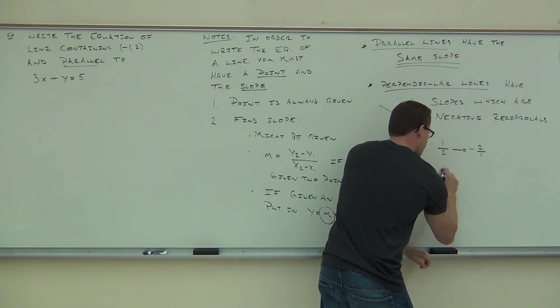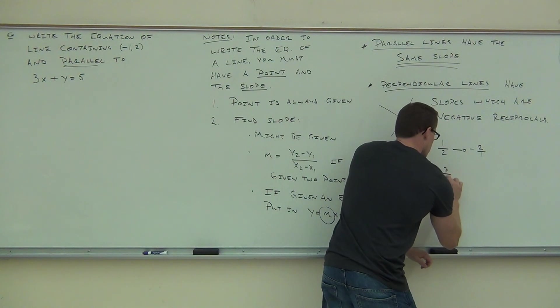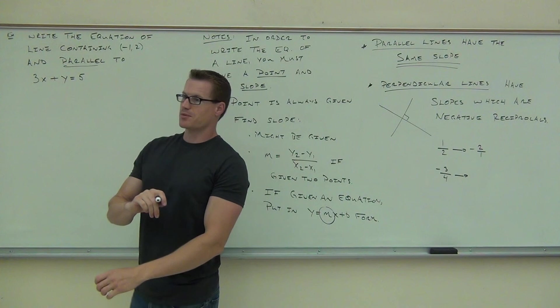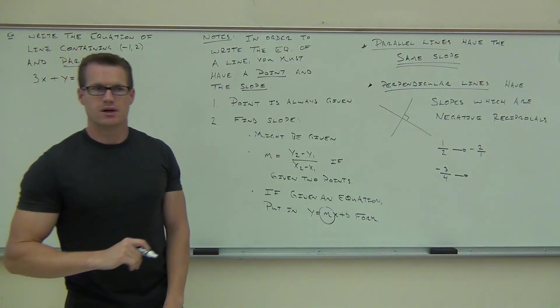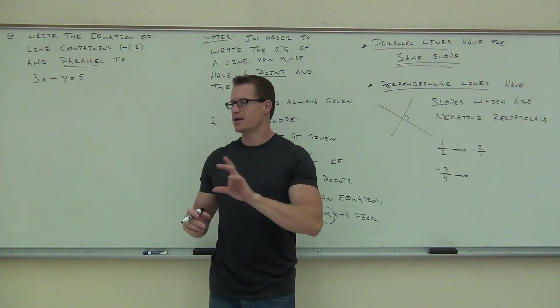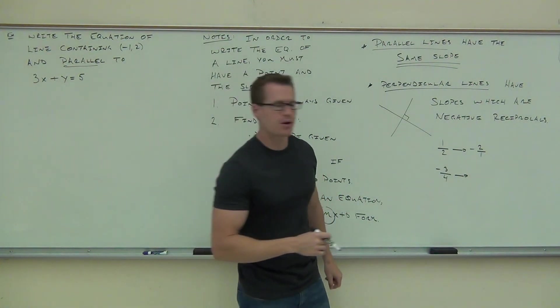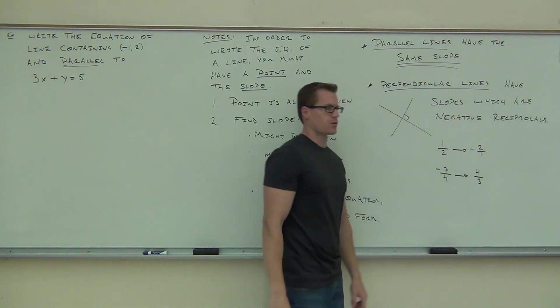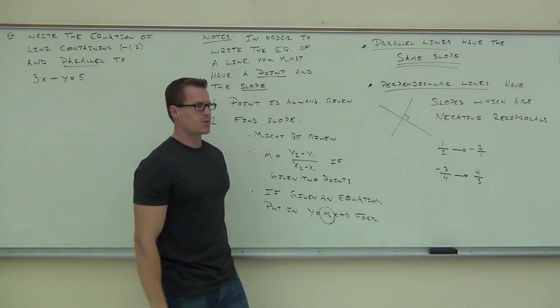How about negative three-fourths? What's the negative reciprocal of negative three-fourths? Four-thirds. It's not negative four-thirds still? No. So no matter what, we have to change the sign. That negative means you're changing the sign there. So here we're going to have positive four-thirds, for sure. We're going to flip that and we're going to change the sign.